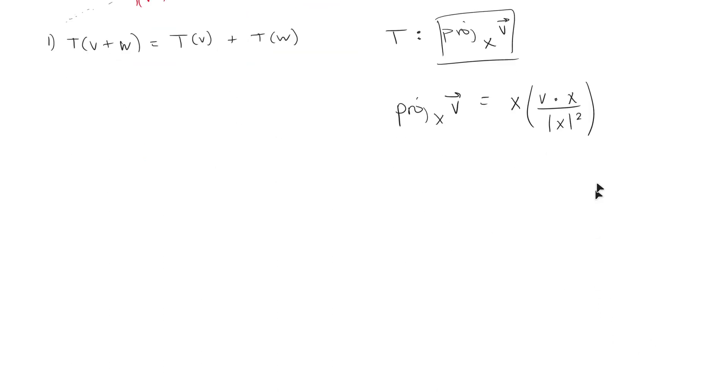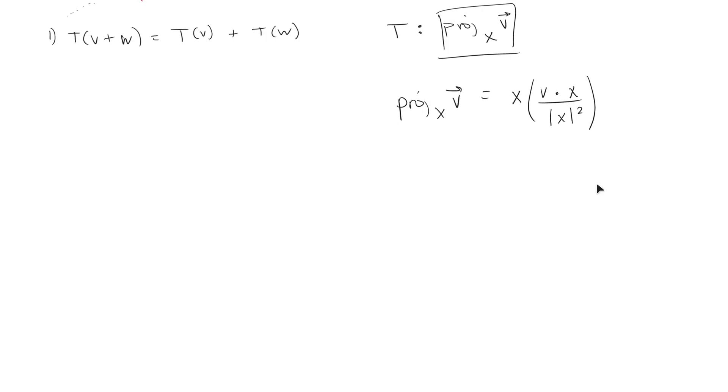So here we go. Let's do this left side. The left side is going to be X times V plus W divided by the length of X squared. Because V in this case is V plus W.